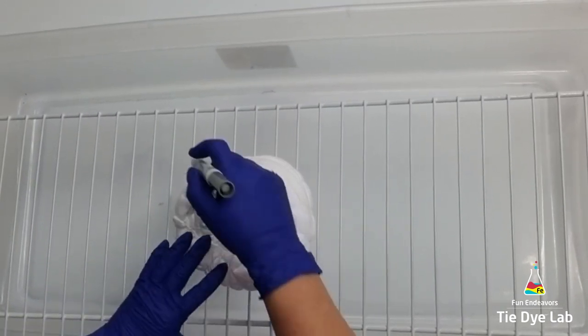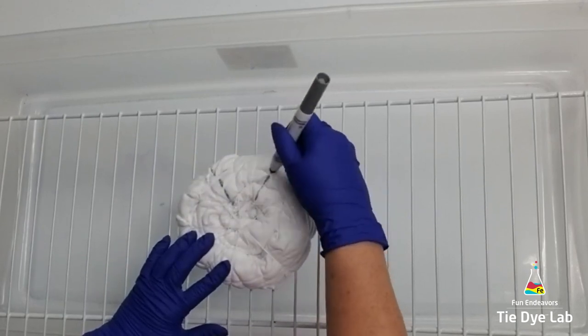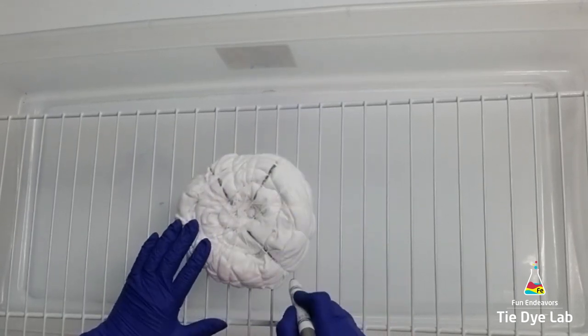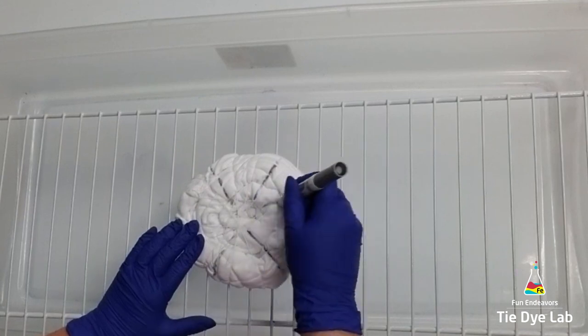Before I begin dyeing, I'm going to take a washable marker and divide my shirt into sections. I started on the front and I wasn't really happy with the way I divided my shirt.